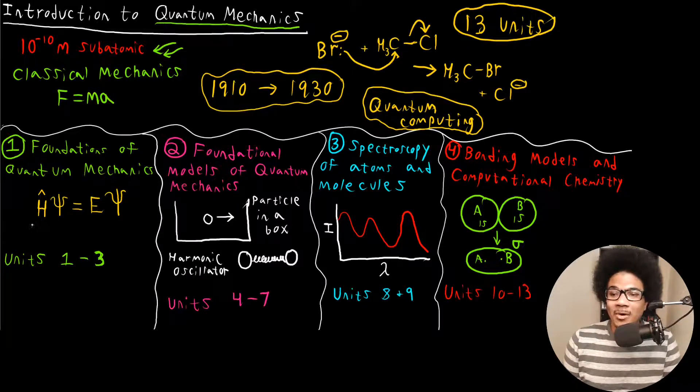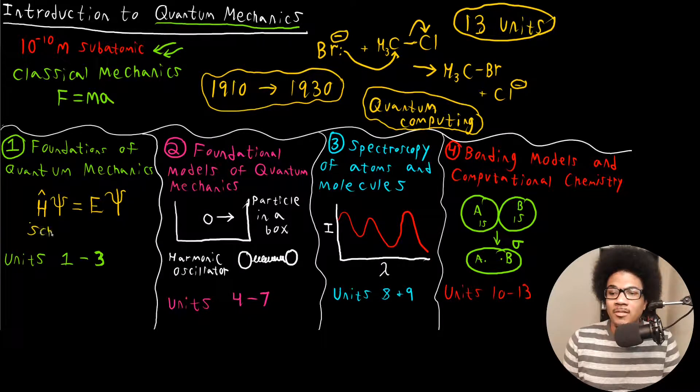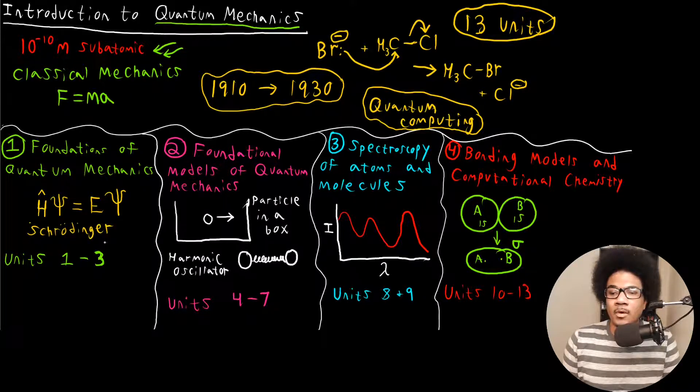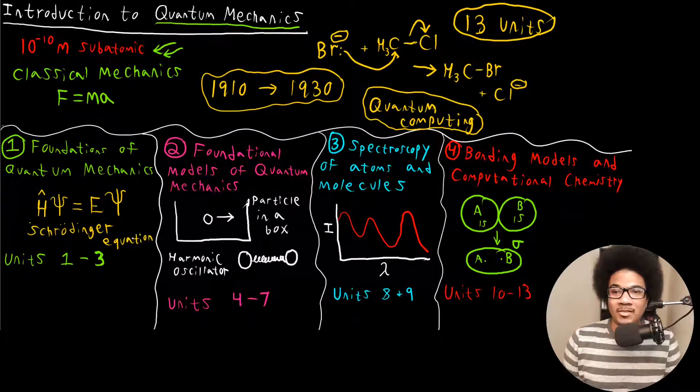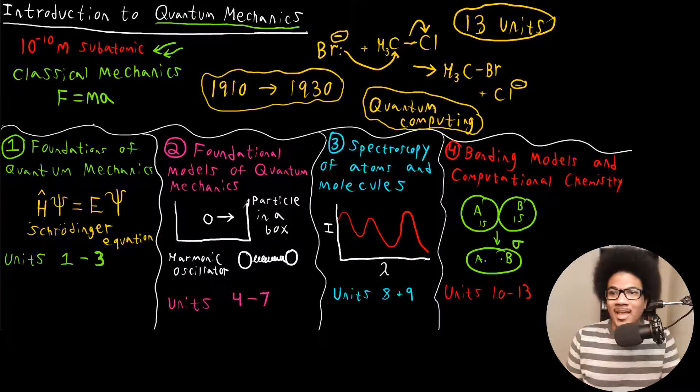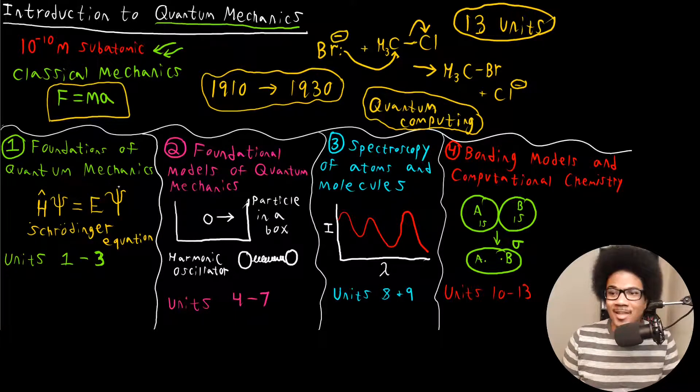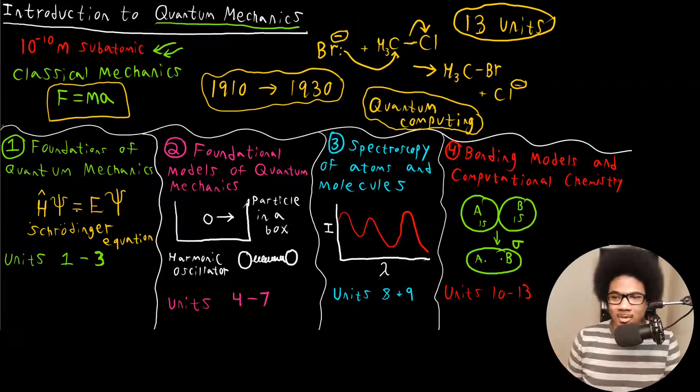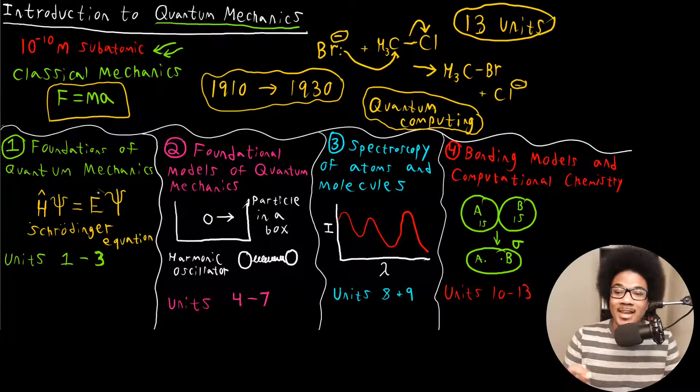And it really hinges on this equation right here. This is called Schrodinger's equation. And this is the equation that governs all of quantum mechanics. Just like F equals MA governs all of classical mechanics, H psi equals E psi governs all of quantum mechanics. And this H is known as the Hamiltonian, psi is the wave function, and E is the total energy of your system.